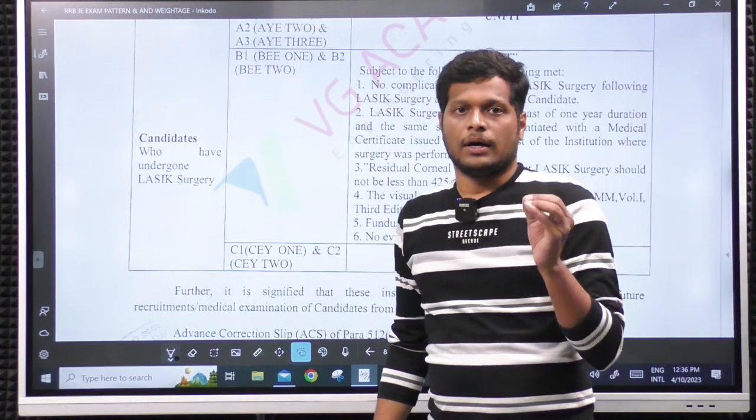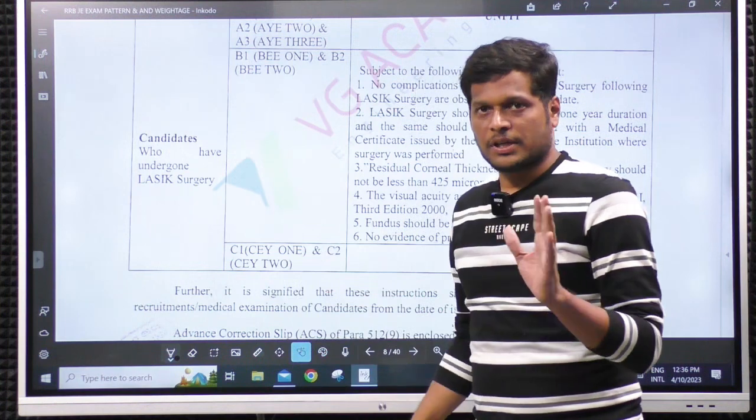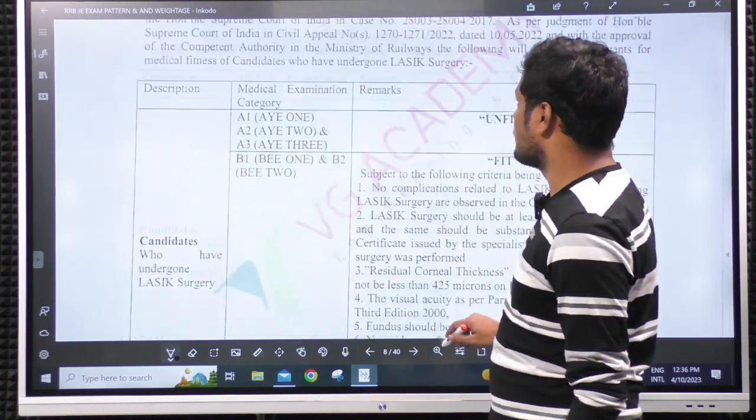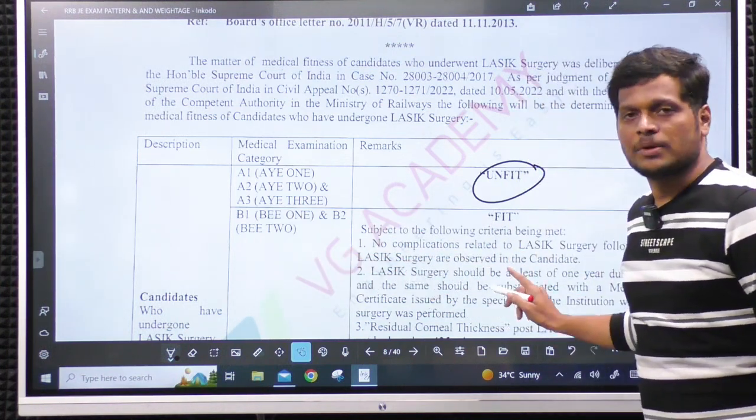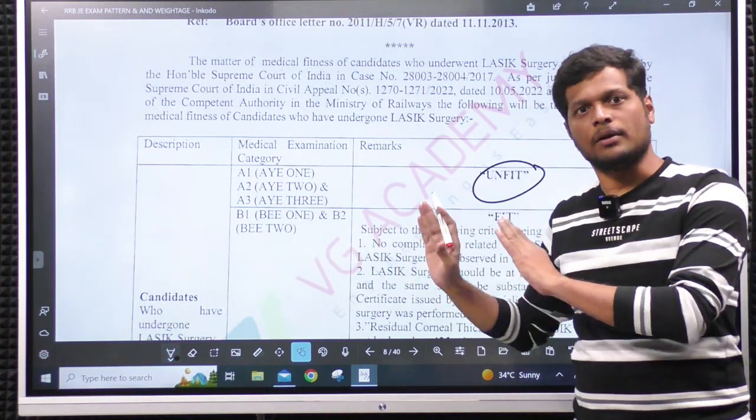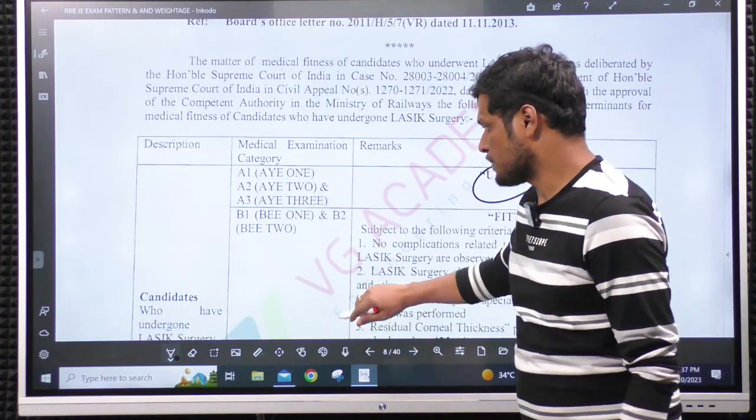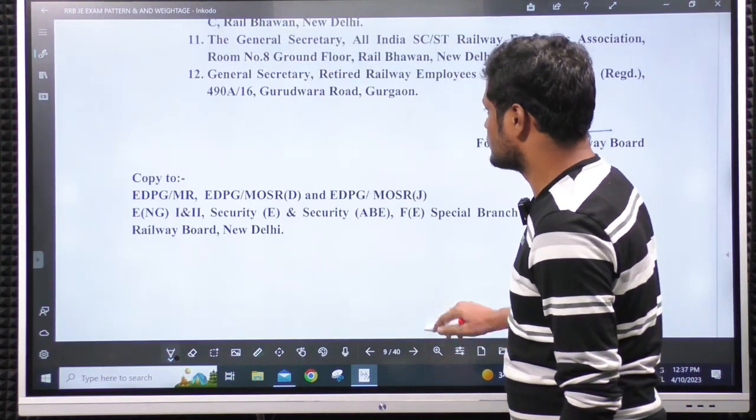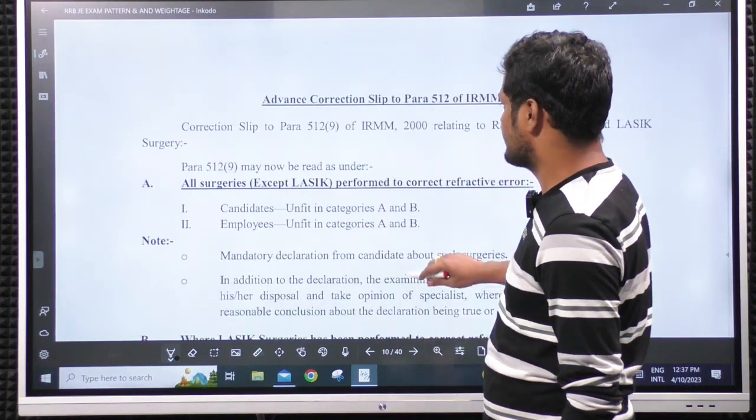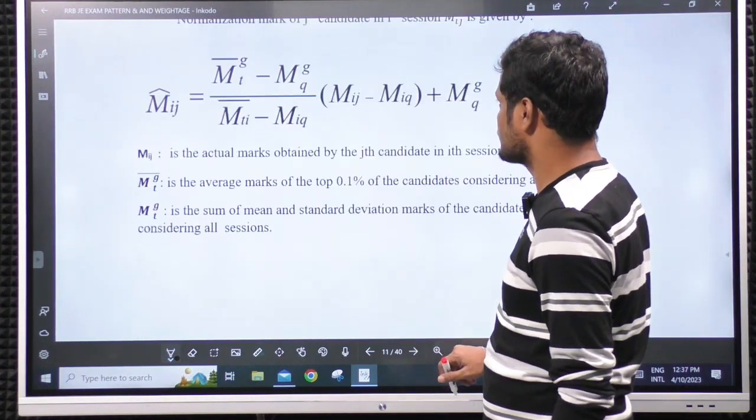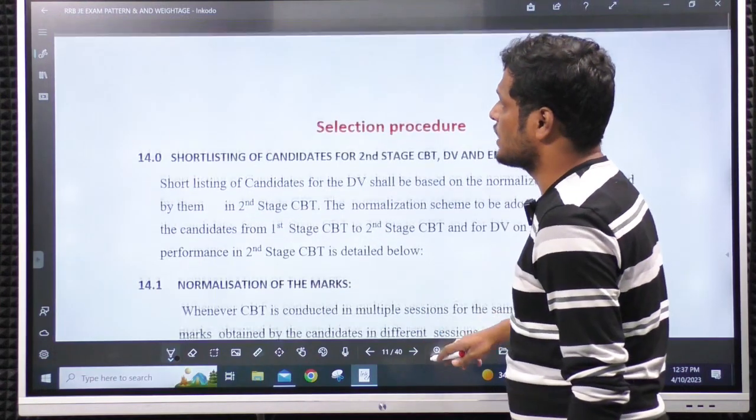In 2019 recruitment, LASIK treatment was not allowed, but for C type post now LASIK is allowed. If you have done any LASIK for C type post, there is no problem. For A type, completely it is unfit, but for B post there are some allowances. You can read these allowances. If it is within your limit, you can apply for B post as well.